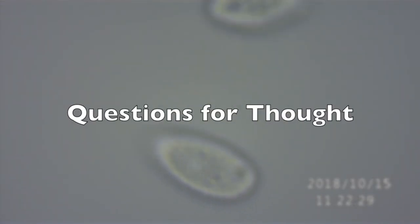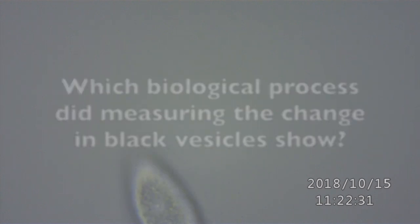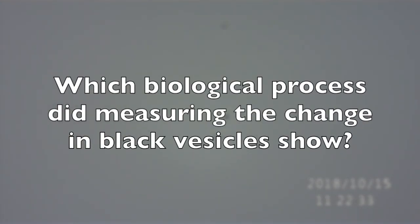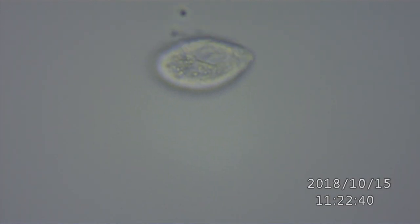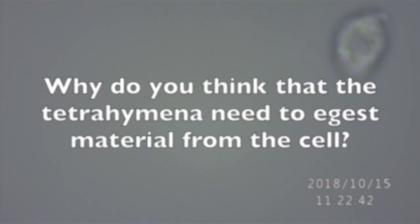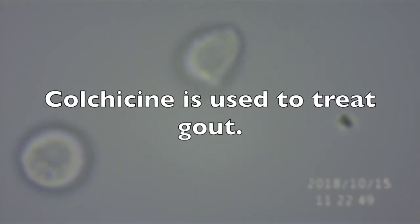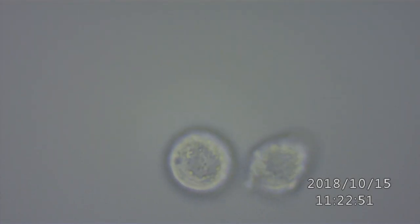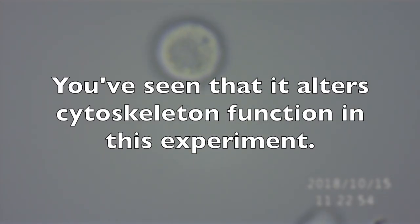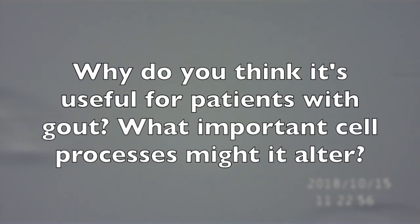Questions for thought: which biological process did measuring the change in black vesicles show? What about the red vesicles? Why do you think Tetrahymena need to eject material from the cell? Colchicine is used to treat gout — you've seen that it alters cytoskeleton function in this experiment. Why do you think this is useful in patients with gout, and what important cell processes might it alter?